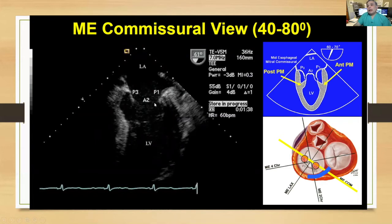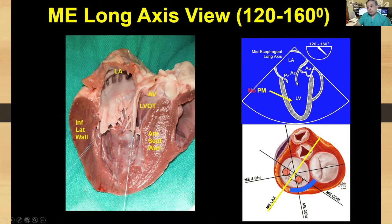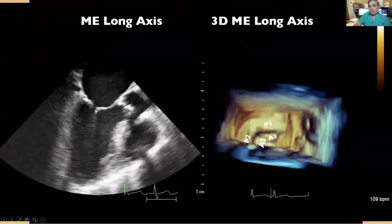Here we have an actual intercommissural view with our left atrial appendage, P1 segment, A2, and P3. From that view, we can rotate 90 degrees to get our 120-degree view, which is the long-axis view. Here we have our A2 and P2 segments, and we can take nice measurements of the leaflets. These are typically what we call our grasping view for the MitraClip. Here we can see an actual long-axis view with our anterior leaflet and posterior leaflet, which we'll use for grasping.